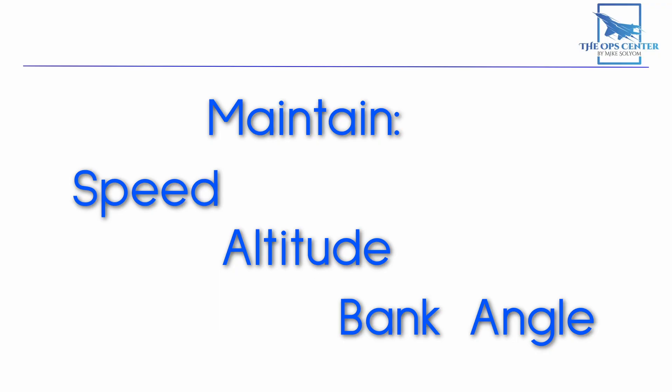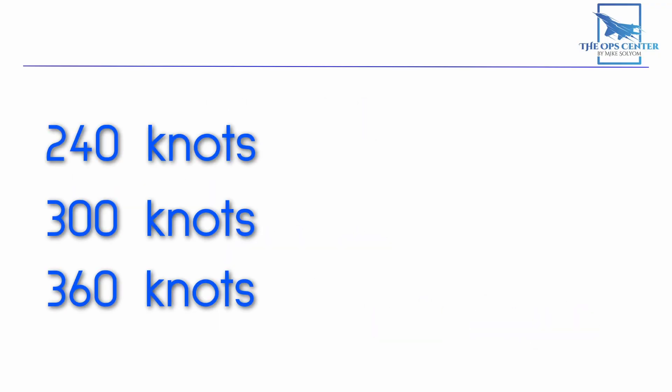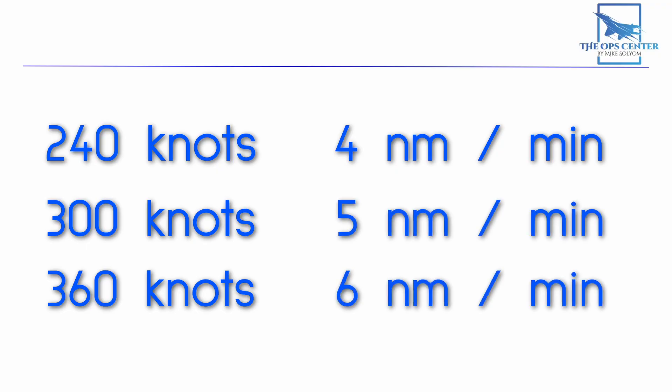You may have noticed that the speeds I used are divisible by 60. This is because speeds divisible by 60 make it easy to calculate how long your trip will take. 240 knots is 4 miles per minute, and 360 is 6 miles per minute.